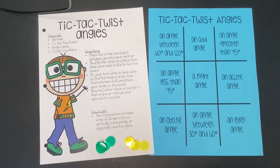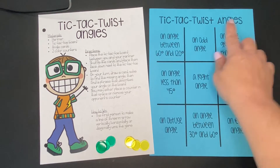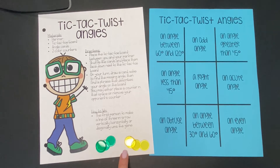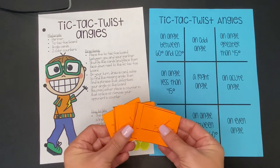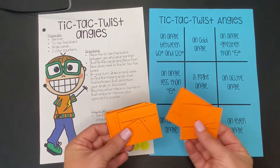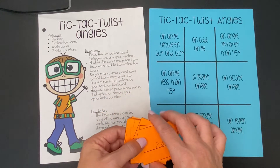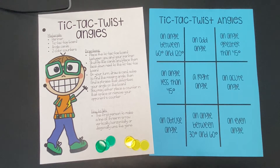To play this game, you are going to need a partner and you'll need the tic-tac-toe board for this game — Tic-Tac Twist Angles. You and your partner will each need a different color for your counters, some way to mark your spot on the board, and then you'll need these angle cards: supplementary and complementary angle cards. You might also want some scrap paper to work your problems on.